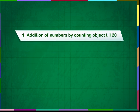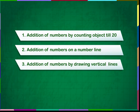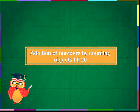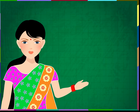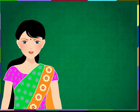Addition of numbers by counting objects till 20. We have learned in our previous lesson that addition means combining two groups of objects. When we put things together, we say we are adding things.